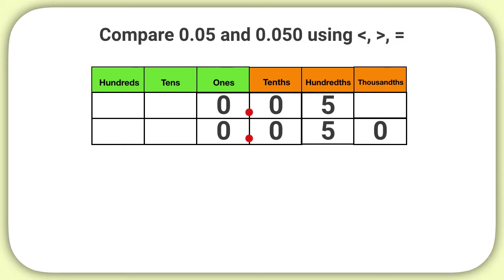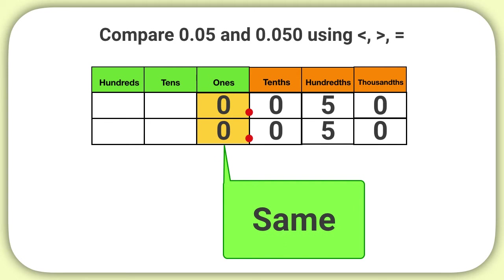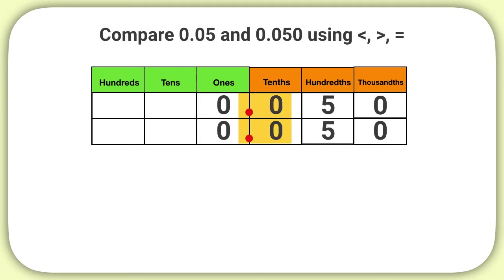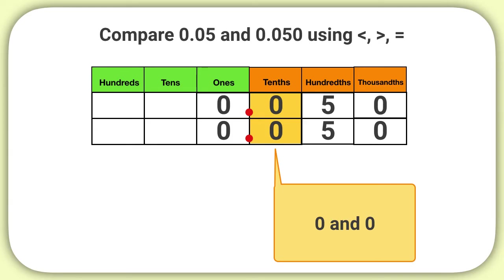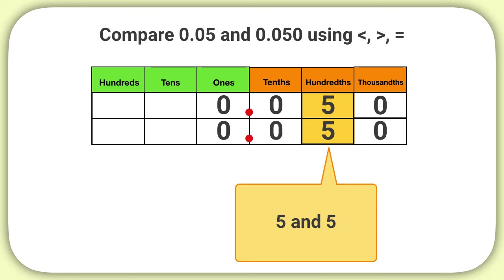I notice that my top number is shorter than my other number. To keep things easy, I'm going to add a placeholder 0 in my place value chart. I'll start comparing the digits in the largest place value, the ones place. Both of these numbers have a 0 in the ones place — the 0s are equal in value. Moving to the tenths place, both numbers again have the same number, 0. I move to the next largest place value, the hundredths place, where both numbers have a 5.